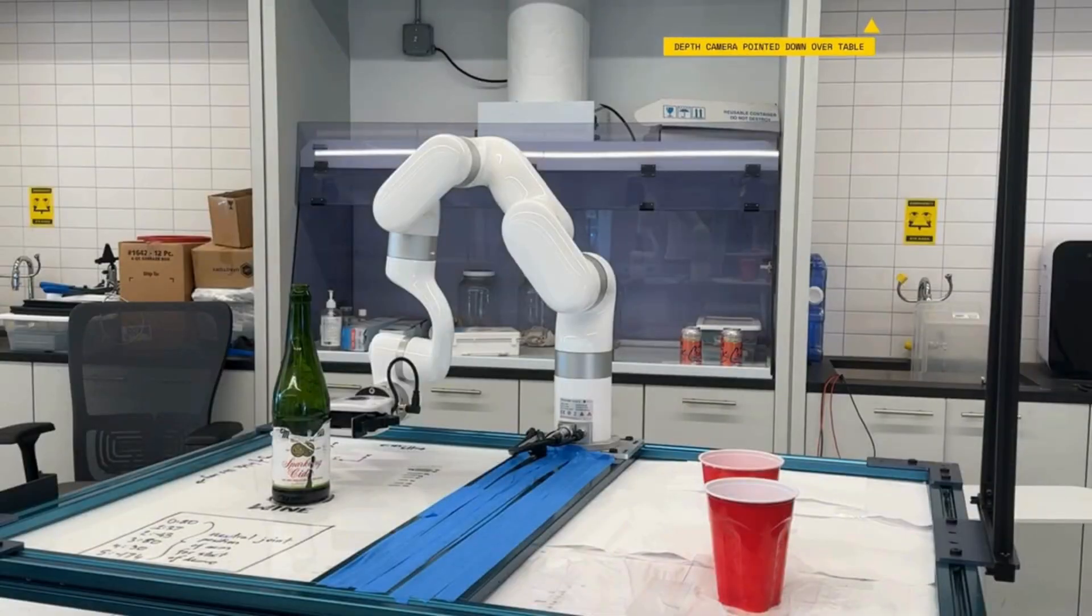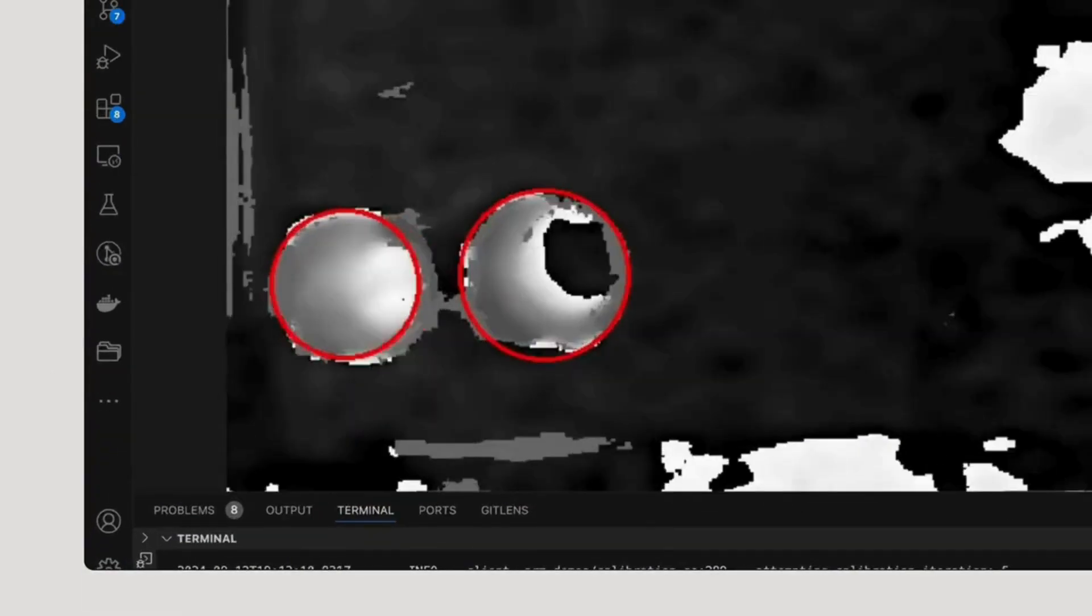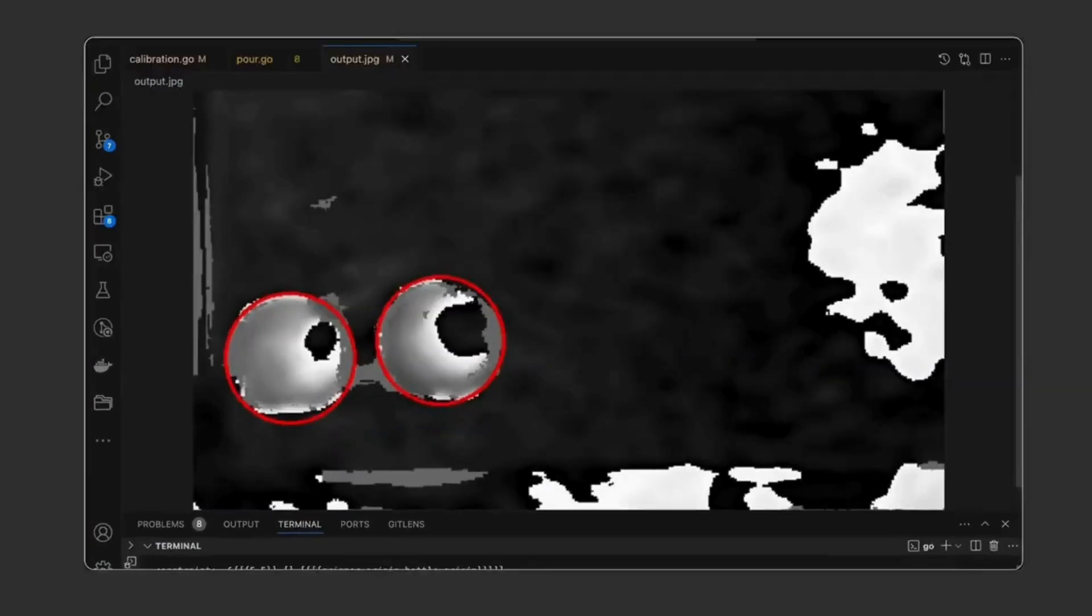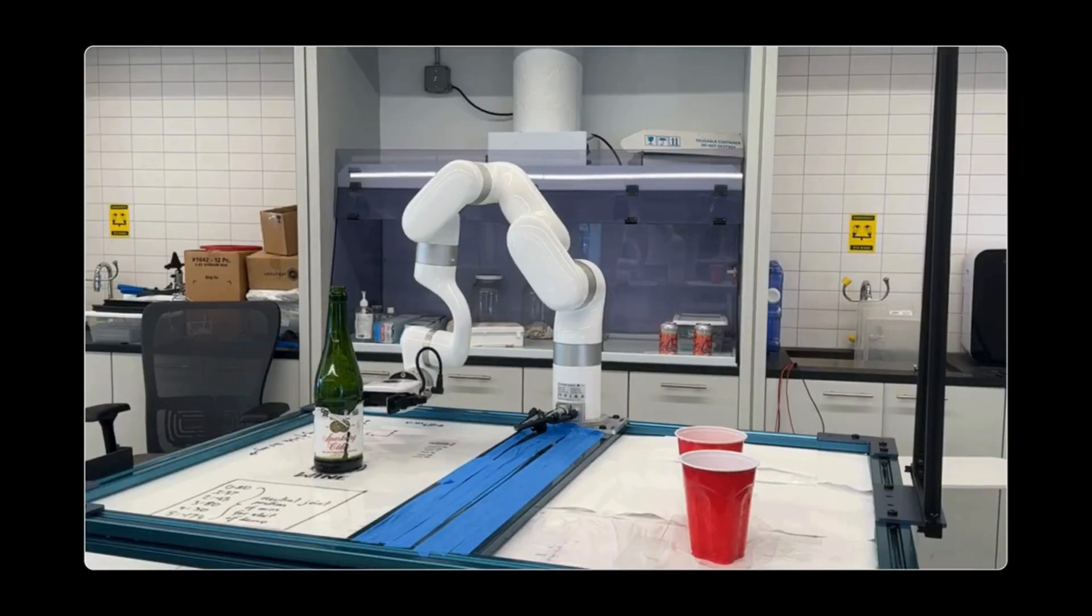The depth camera is pointed down at the table where the cups are. VM uses computer vision techniques to extract circles indicating the cup location on the table.